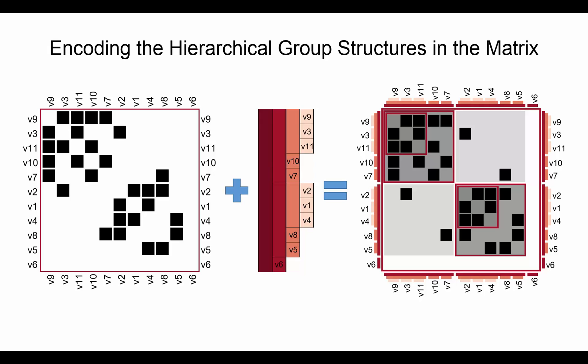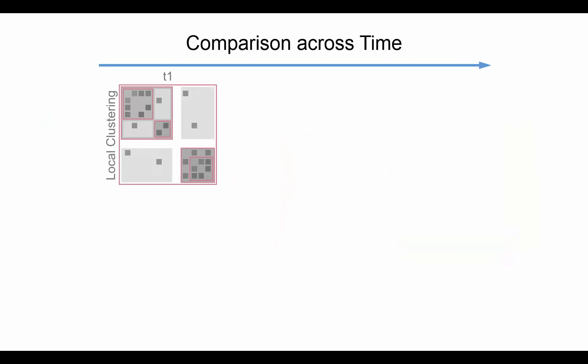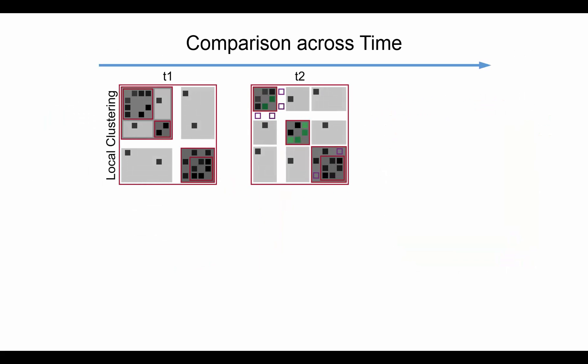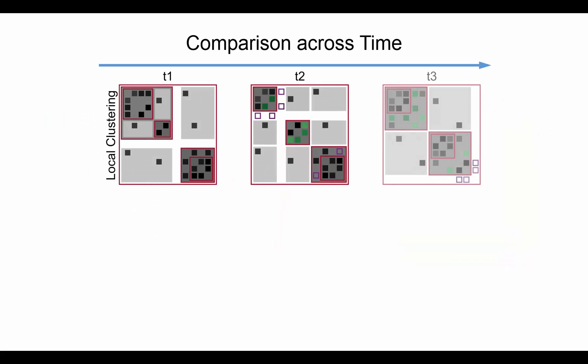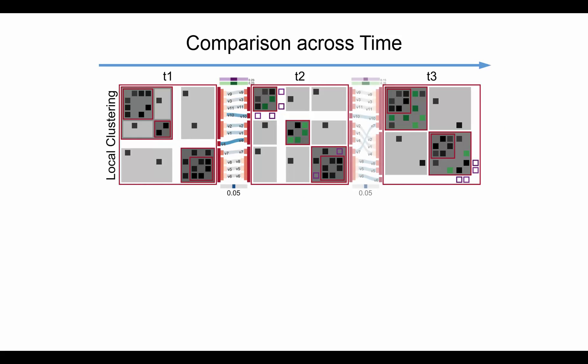Edges that were added or removed compared to the previous point in time are highlighted using green or purple respectively. The matrices of the dynamic graph are arranged horizontally, where transitions between points in time are visualized using a flow metaphor.